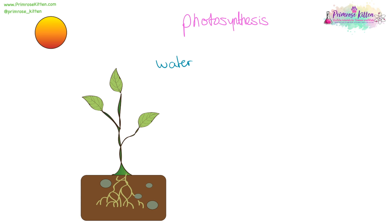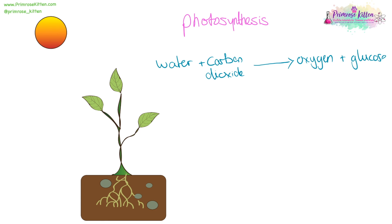Photosynthesis is going to take water and carbon dioxide, and turn it into oxygen and glucose. We can take light and put it above the equation, but do not put it in the equation because it is not a reactant — it's just a condition that's needed. You also need to know the symbols: H2O + CO2 → O2 + C6H12O6. This needs to be balanced, but it's a nice easy one because it is 6, 6, 6.